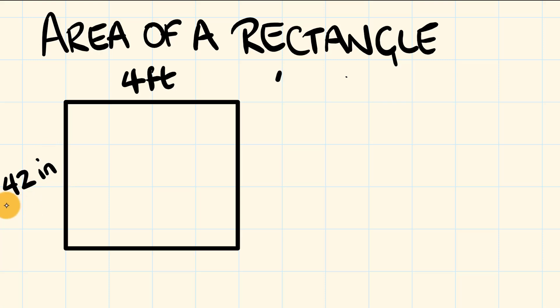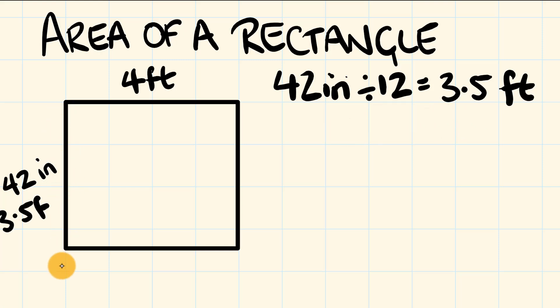So 42 inches is equal to, well, there's 12 inches in a foot. So we're going to divide by 12 and that's going to tell us what it is in feet. So 42 divided by 12, this is three and a half feet. So this is 3.5 feet.